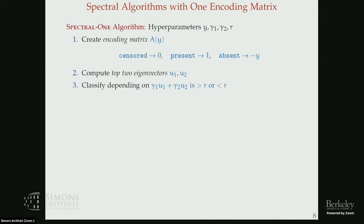Here is the class of spectral algorithms I'll discuss — Spectral-1. You first encode the graph using a single matrix: if there is a censored connection you put zero, if present you put one, and if absent you put minus y, giving three types of information. Then compute the top two eigenvectors, take a linear combination, and classify vertices according to whether this linear combination is above or below a threshold. This class is well-studied and usually works up to the information-theoretic threshold when there is no censoring.